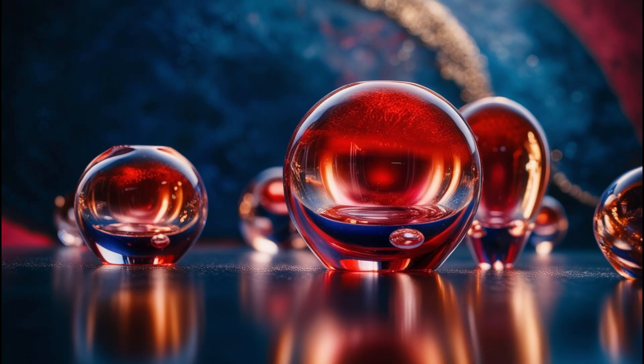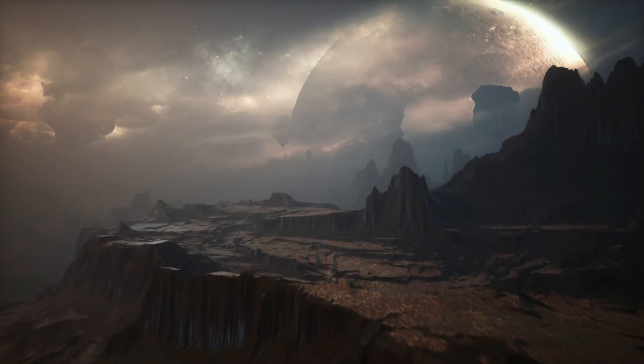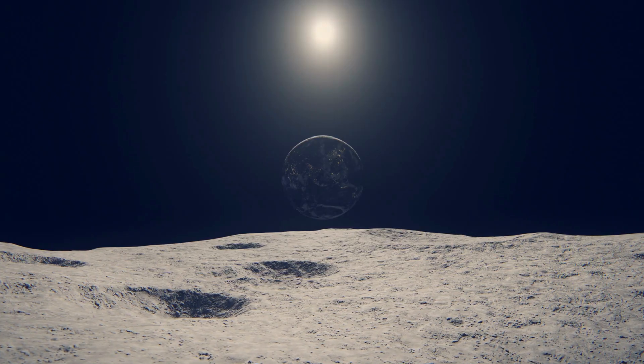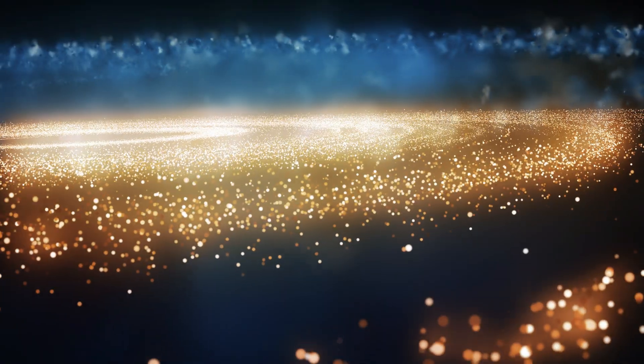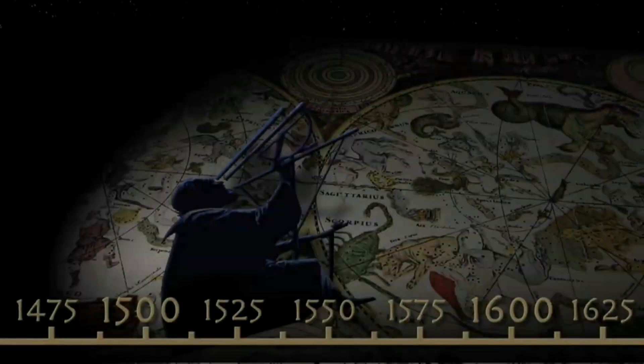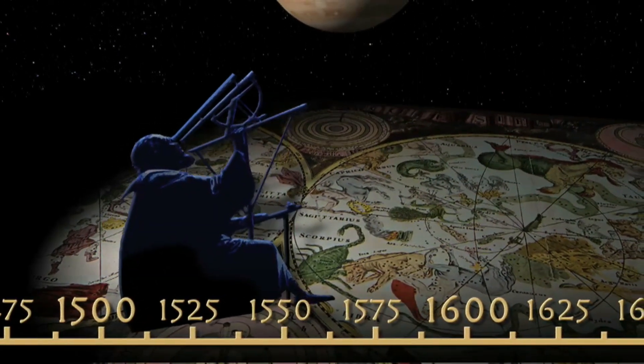When these glass shards rain down, they impact the planet's surface with incredible force, creating a landscape that's constantly being reshaped by the relentless bombardment. The surface of HD-189733b is likely covered in a layer of shattered glass, eroded by the continuous onslaught of glass rain. This hostile environment makes it one of the most uninhabitable places in the universe, a true testament to the extreme conditions that can exist on distant worlds.